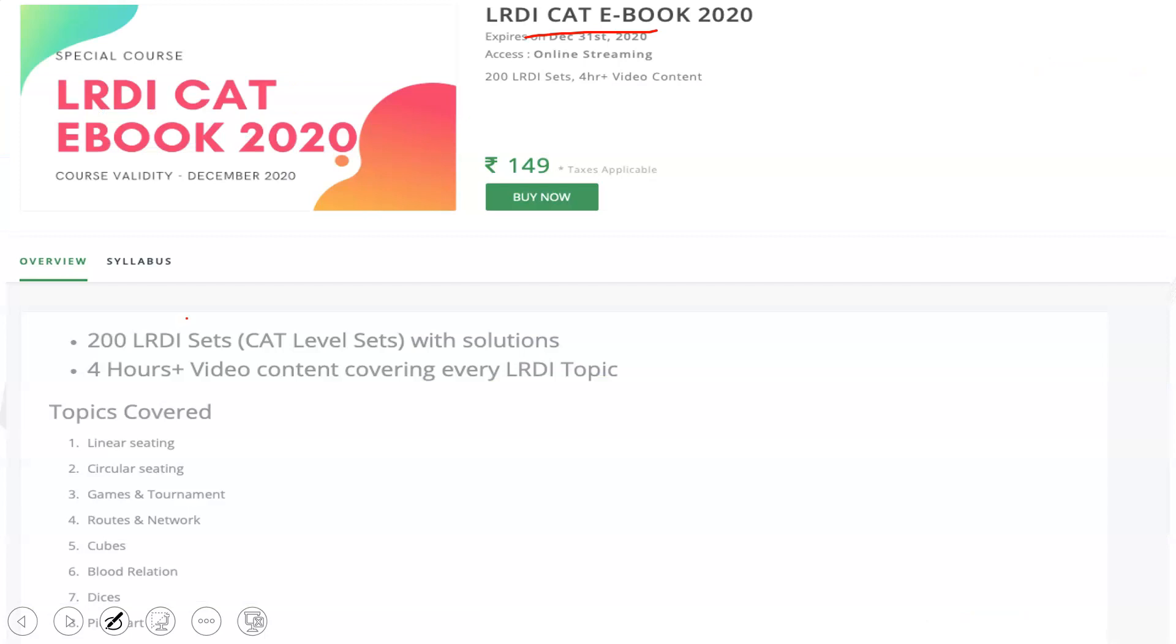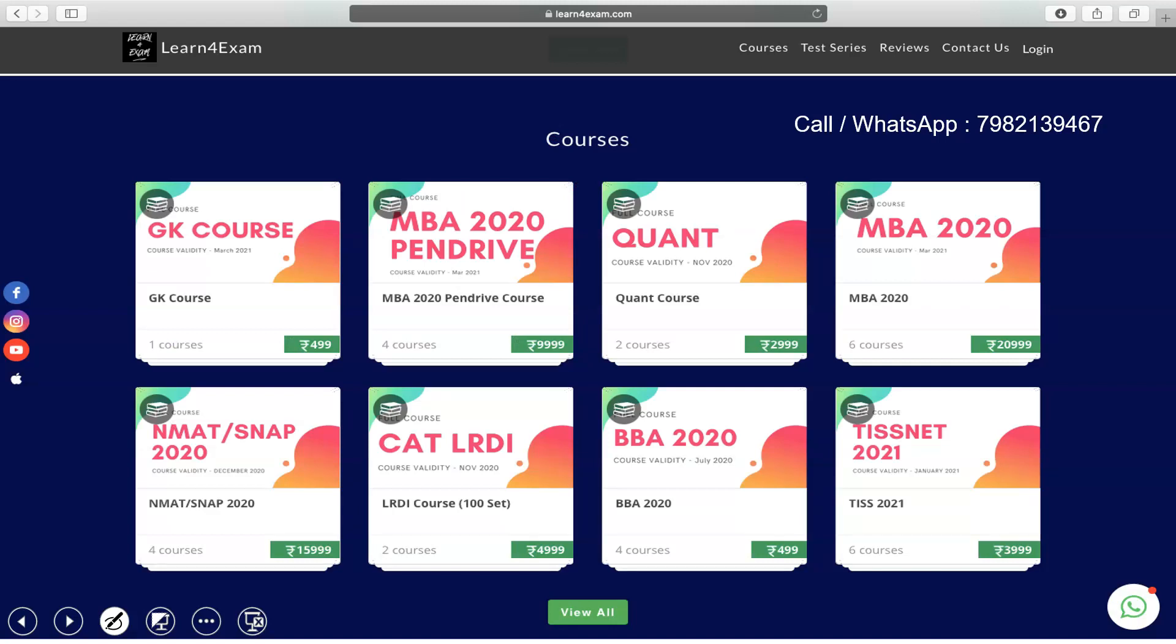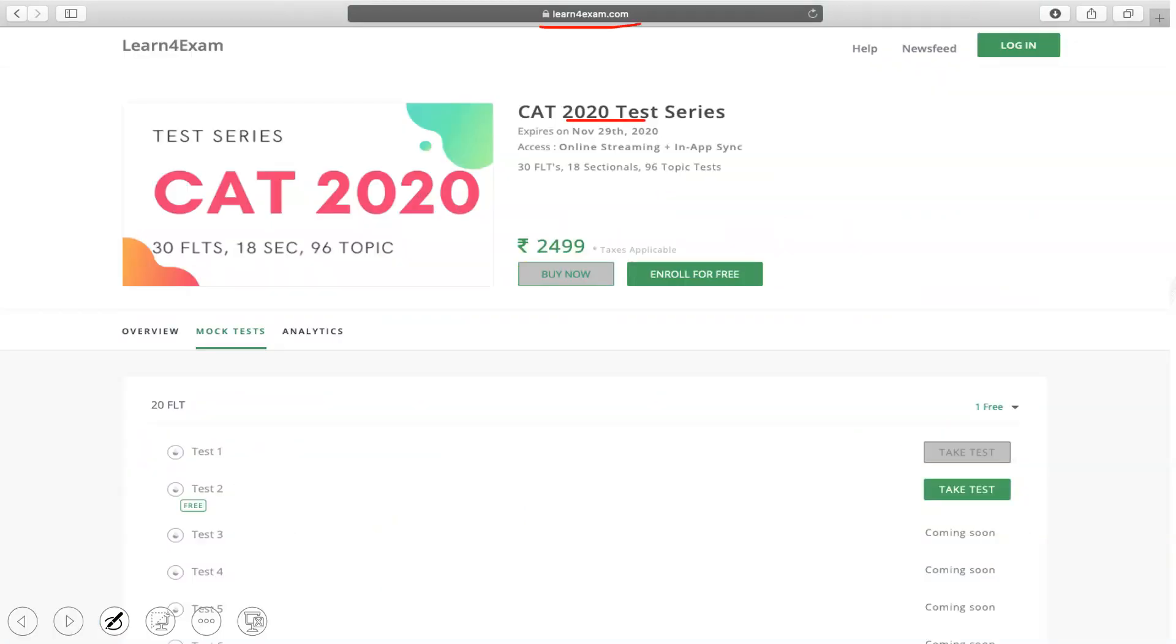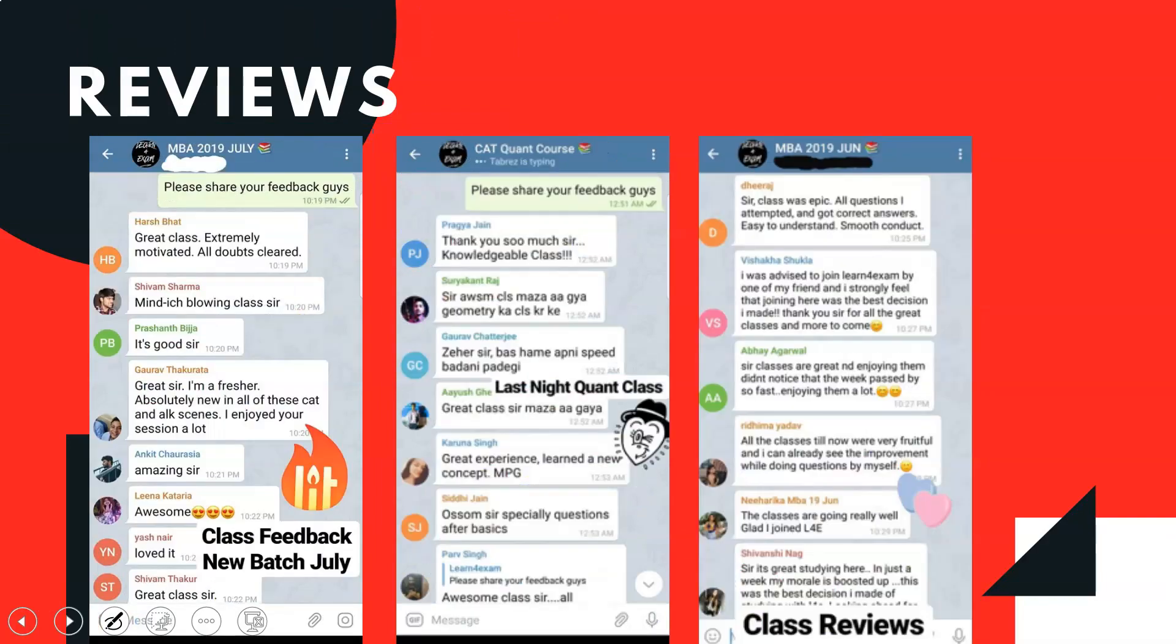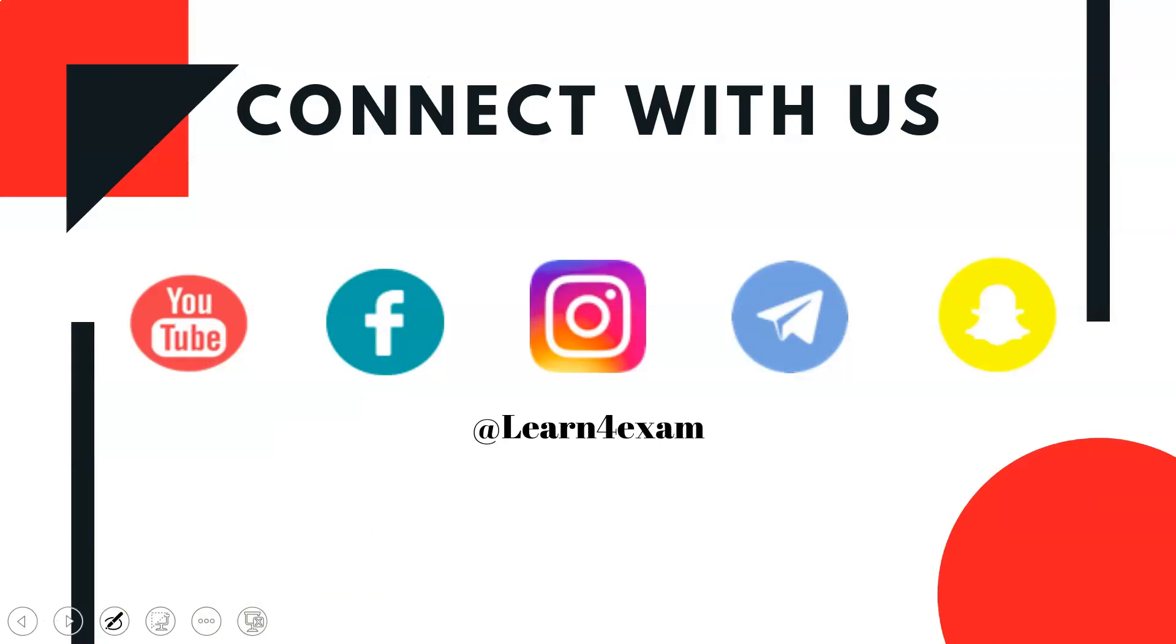But again, if you need any help we have our CAT LRDI ebook. It has 20 LRDI sets with solution and four plus hours of video content. You can go and check this out. It's available on the website, it's only available at 149. Other courses include an LRDI course where we would be doing 100 sets and other than that the normal courses of MBA 2020 pen drive live MBA 2020 and NMAT SNAP 2020. You can call or WhatsApp on this number if you have any queries. This is the CAT 2020 test series you can go to Learn for Exam and check that out. These are the special courses and test series, these are the reviews and results of 2019. You can pause the video and check these ones out. And if you're not connected with us connect with us over YouTube, Facebook, Instagram, Telegram and Snapchat at Learn for Exam. I hope you like this video so please do not forget to press the like button. Have a very good day ahead and take care of yourselves bye.